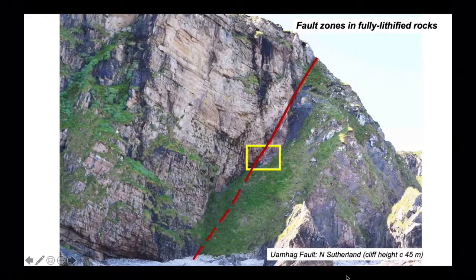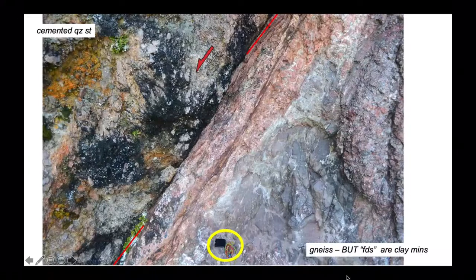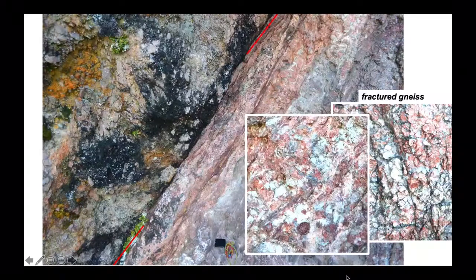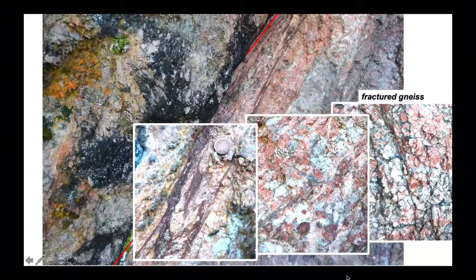Zooming in to the fault zone itself — there's a compass for scale — the sense of movement is shown running down to the left, down-throwing the quartzites against the gneiss. Away from the fault plane, the gneiss is fractured; it's actually a pegmatitic gneiss with pink feldspars. As we come closer in, the rocks get a bit streaked out, and right against the fault plane you can hardly tell it was a gneiss at all. It's a ground-up rock flour — a gouge. So we have a zone of processing from more intact rock into increasingly grain-size-reduced gouge as we approach the fault plane.